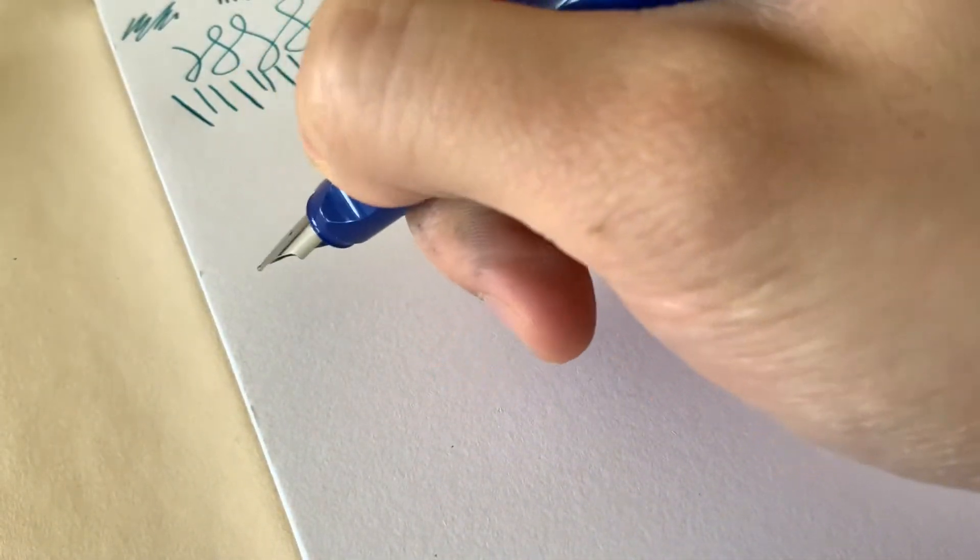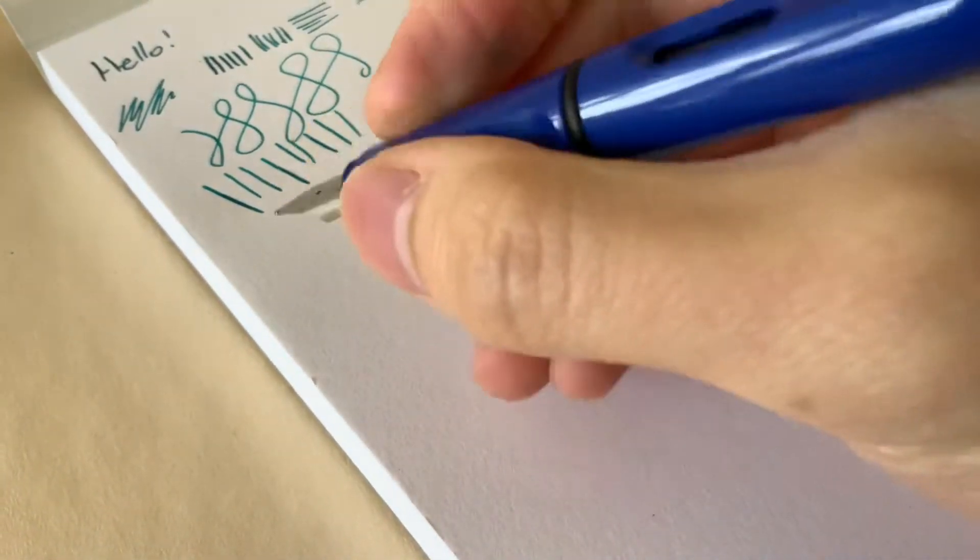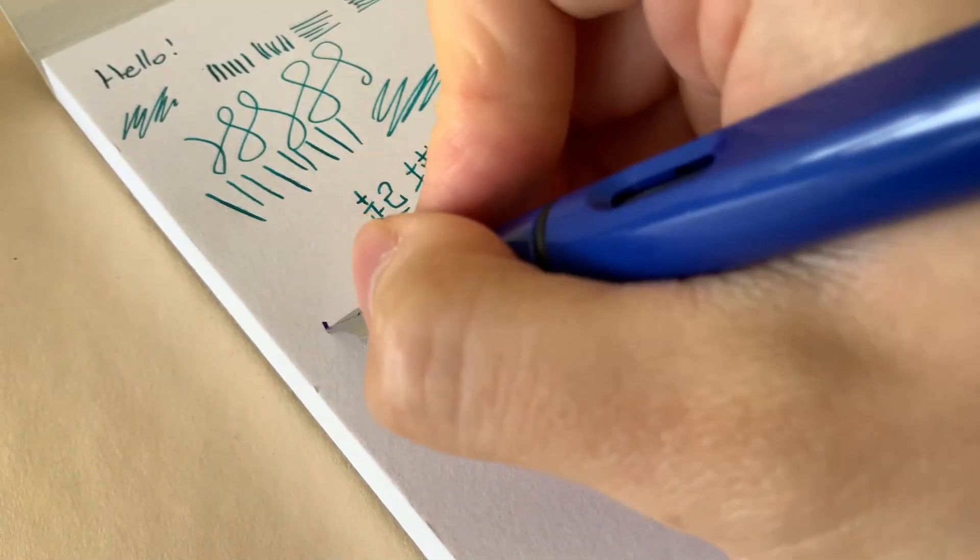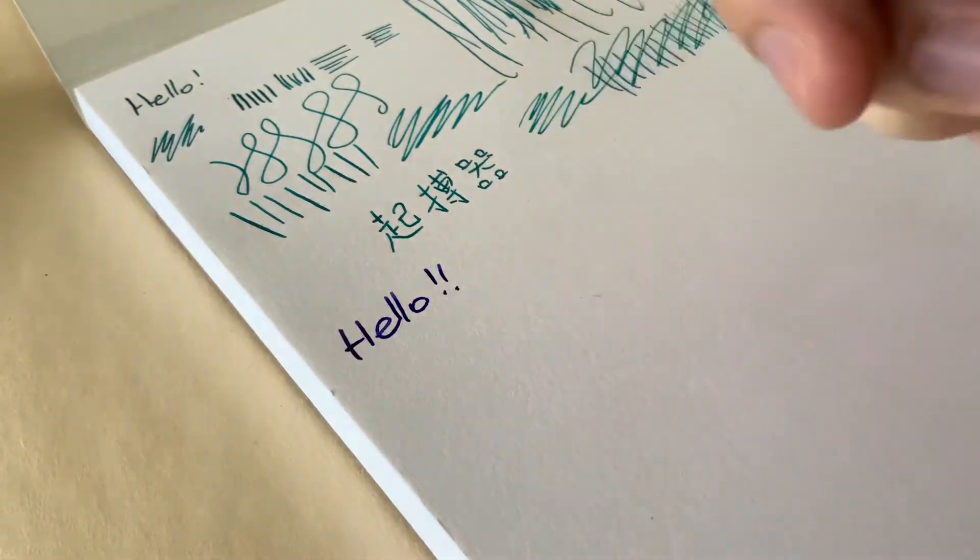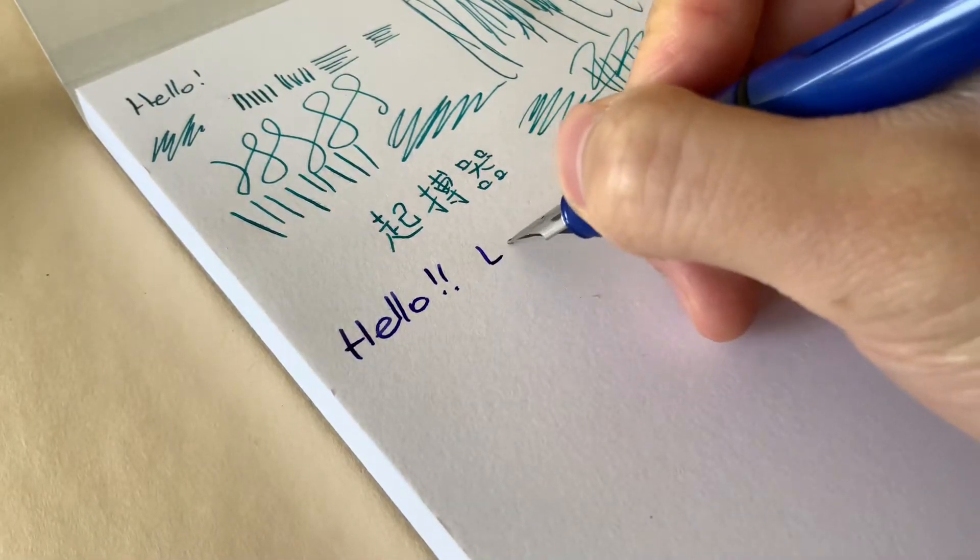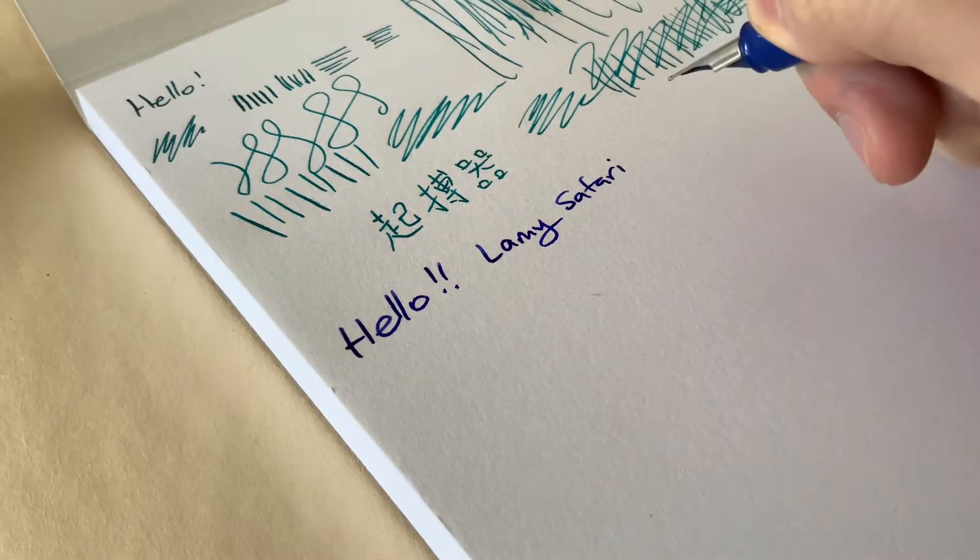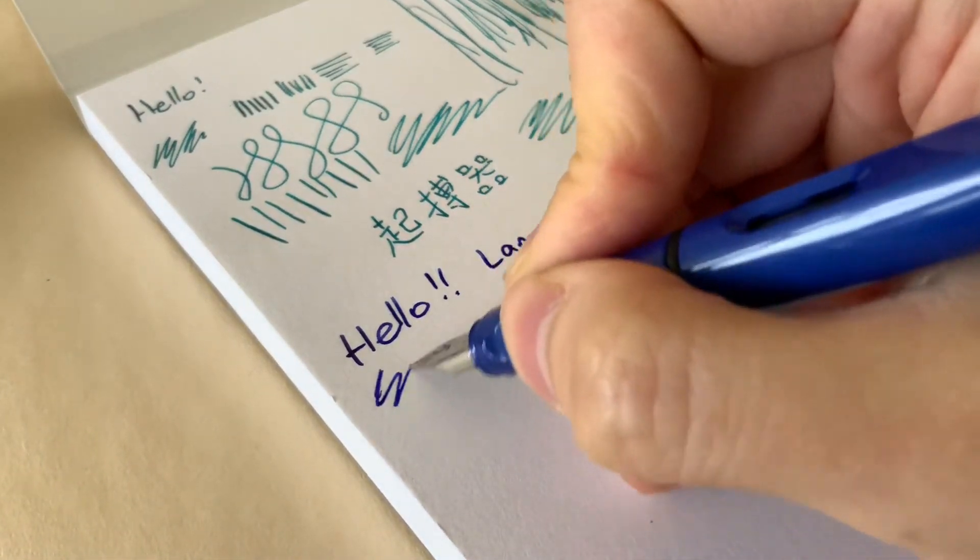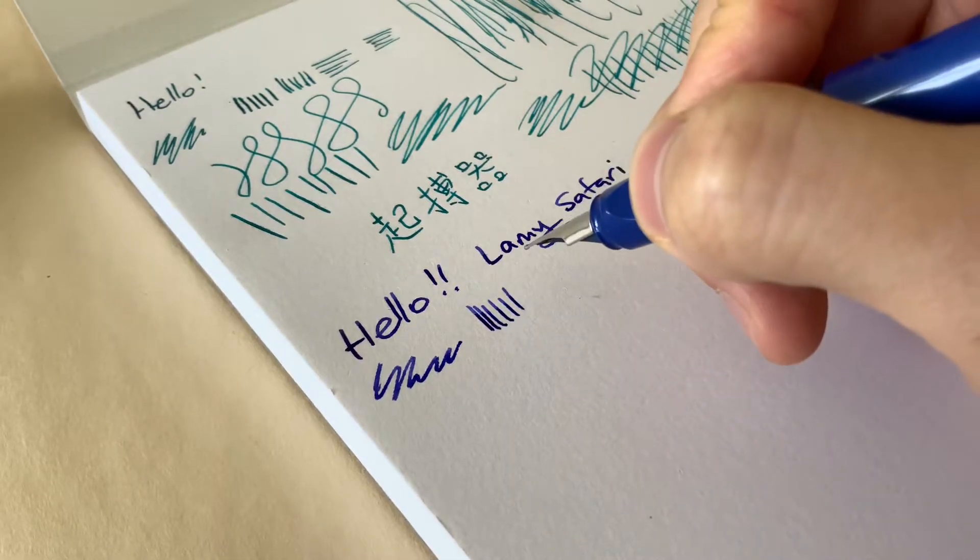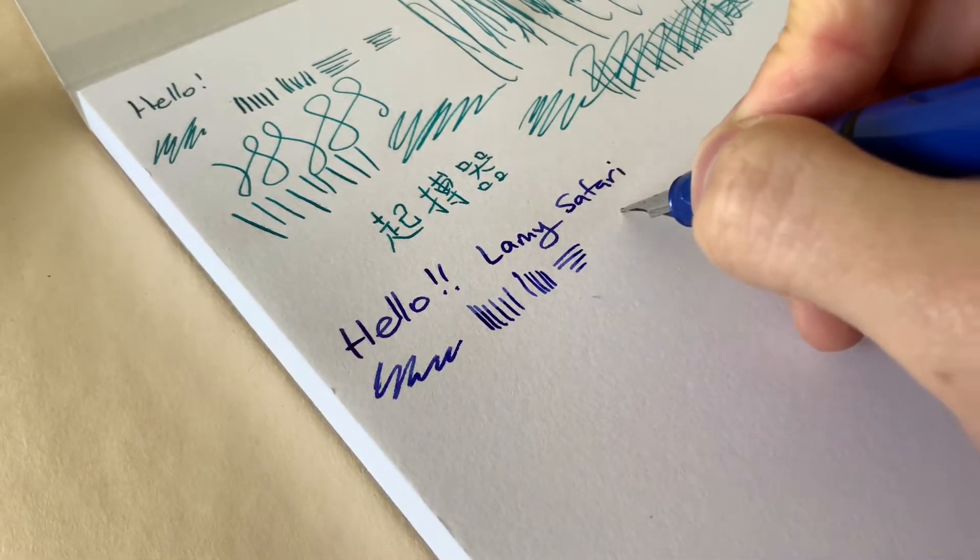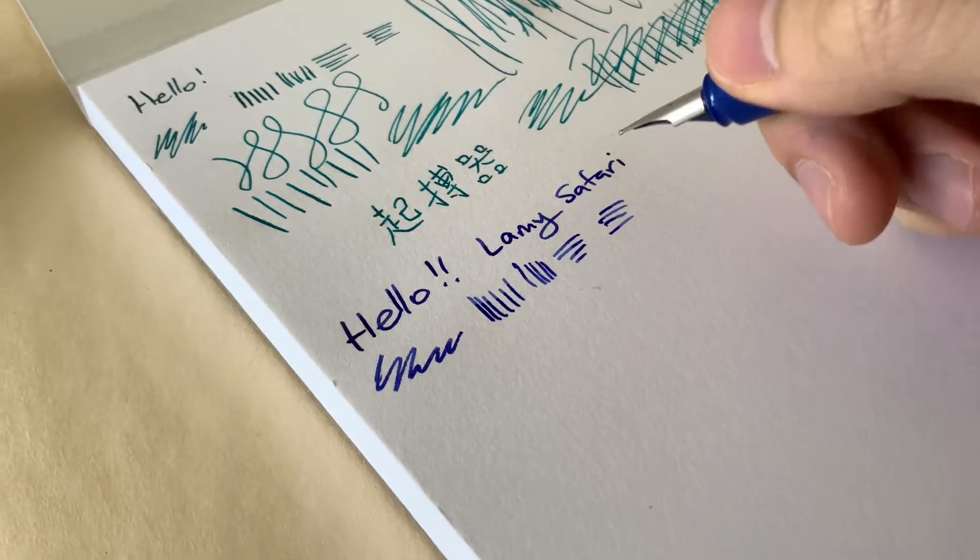And just a comparison here. Now, let's see. So, the cross hatching up, down, left, right, no skipping.